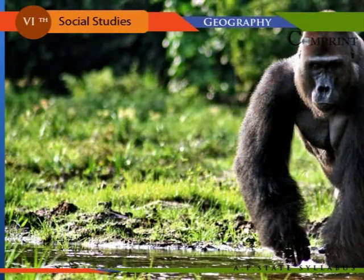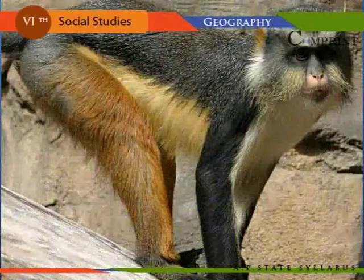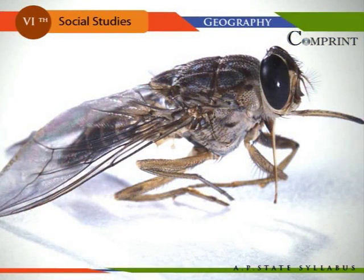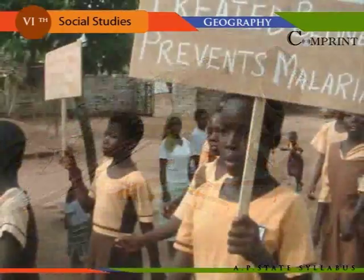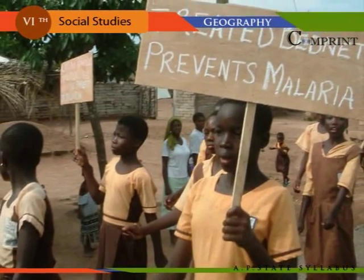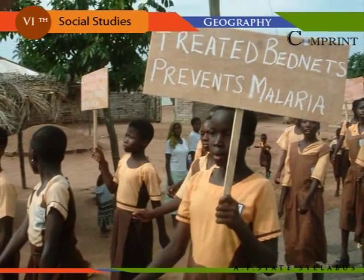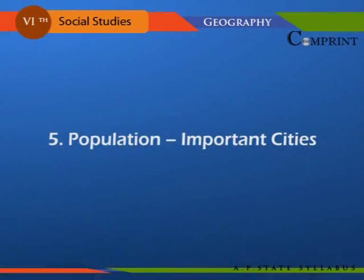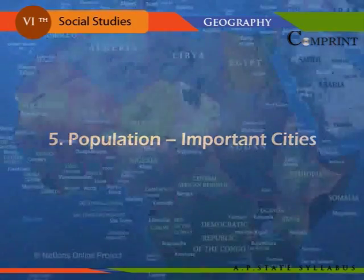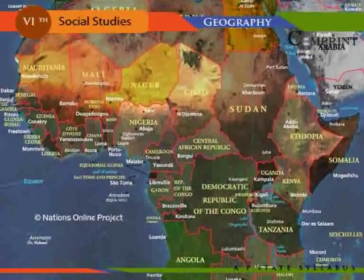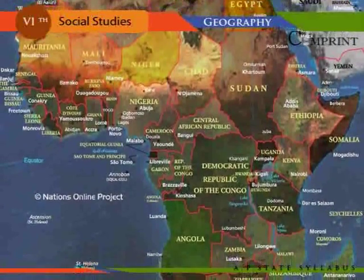Animals like gorilla, chimpanzee, monkeys, hippopotamus, snakes, and various kinds of insects like the tsetse fly — which can even kill animals — are found in the equatorial region. The forests have a hot, wet climate. Malaria and yellow fever are common diseases.